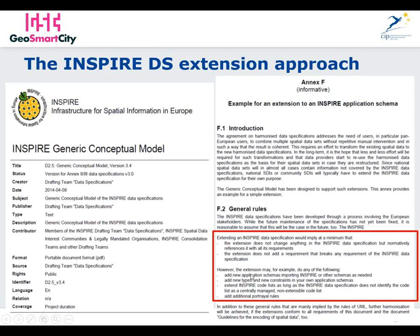However, the extension may, for example, do any of the following: add new application schemas importing INSPIRE or other schemas as needed; add new types and new constraints in your own application schemas; extend INSPIRE code lists as long as the INSPIRE data specification does not identify the code list as a centrally managed non-extensible code list; or add additional portrayal rules. It is very important that when proceeding to the extension of an existing INSPIRE data specification, these general rules are well taken into account.